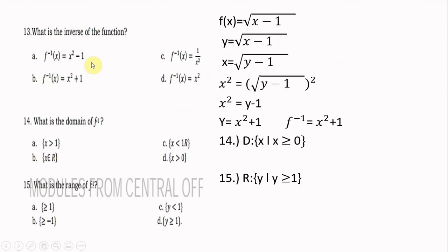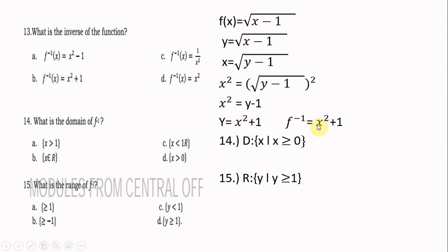Number 13: what is the inverse of the function f(x) = √(x − 1)? Change f(x) to y: y = √(x − 1), then interchange x and y: x = √(y − 1). Square both sides: x² = y − 1. Transpose −1 to the right side: y = x² + 1. Therefore, the inverse is f⁻¹(x) = x² + 1.